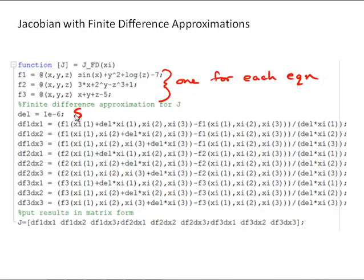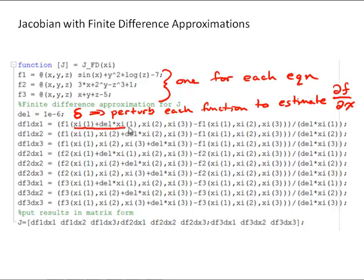And here's our del, that's the amount that we're going to perturb, let's say, each function to estimate its partial derivative. So, then we just go through. In this first equation, you'll see right here, we will perturb the first variable, x1, in this case that's x, and then divide by that.